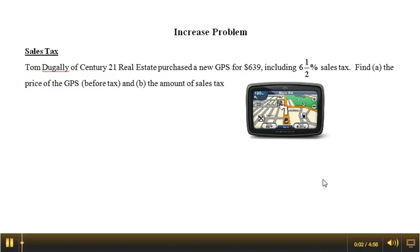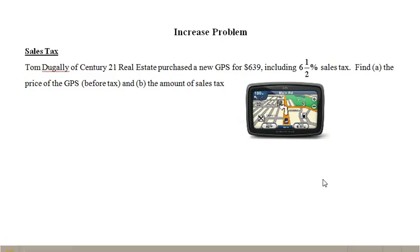In this lesson, we will demonstrate how to solve an increase problem. The problem reads: Tom Degali of Century 21 Real Estate purchased a new GPS for $639, including 6.5% sales tax. Find A, the price of the GPS before tax, and B, the amount of sales tax.